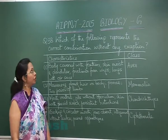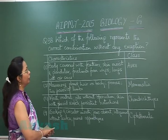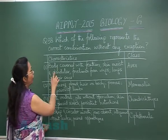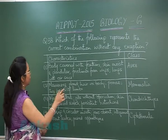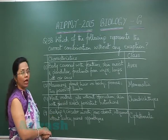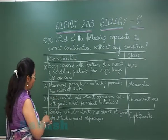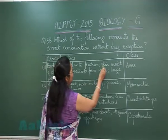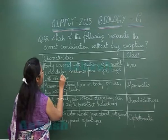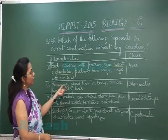Question 38: which of the following represents the correct combination without any exception? The first option lists body covered with feathers, skin moist and glandular, forelimbs forming wings, lungs with air sacs, and Class Aves. However, in Aves the skin is dry and non-glandular, so this option is incorrect.